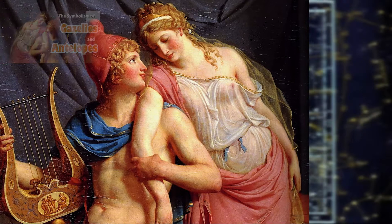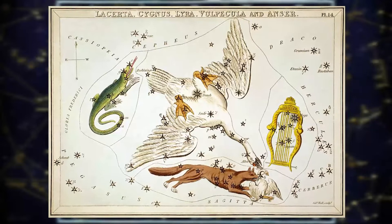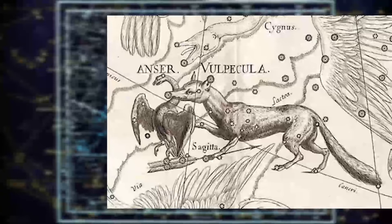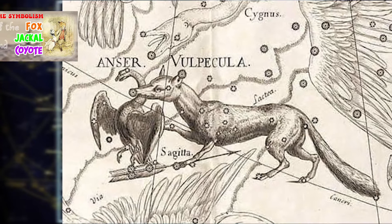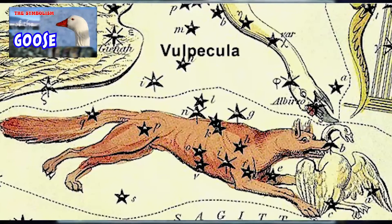Vulpecula Cum Ansere. This is not a Ptolemaic constellation, but in the 1690 Firmamentum Sobiescianum it is known as Vulpecula Cum Ansere. Vulpecula is the Fox constellation and we have a video in the playlist entitled The Symbolism of the Fox. And Ansere is the goose that the fox holds in its jaws; we have a video in the playlist entitled The Symbolism of the Goose.